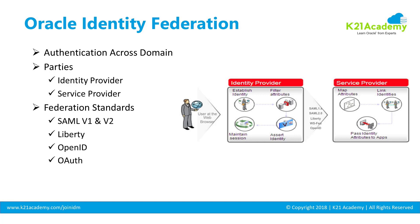When a user tries to access the service provider, the service provider redirects the user to the identity provider. On the identity provider side, the user logs in with their username and password. The identity provider then creates a SAML token — if you are using the SAML protocol — and sends it to the service provider. Because there is already trust between the two parties, the service provider checks that the token was issued by a trusted identity provider.